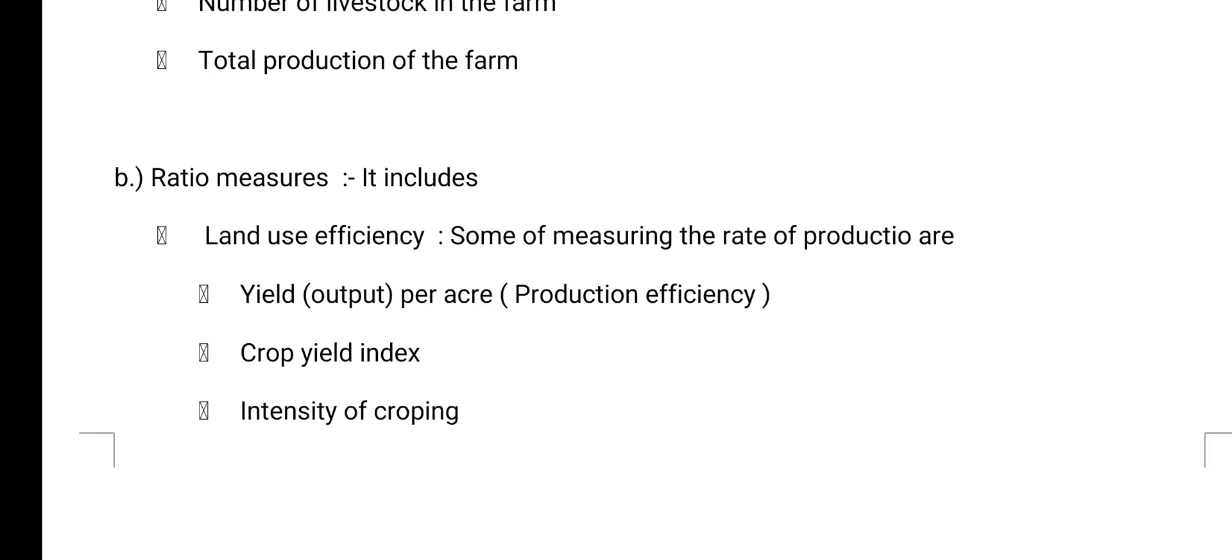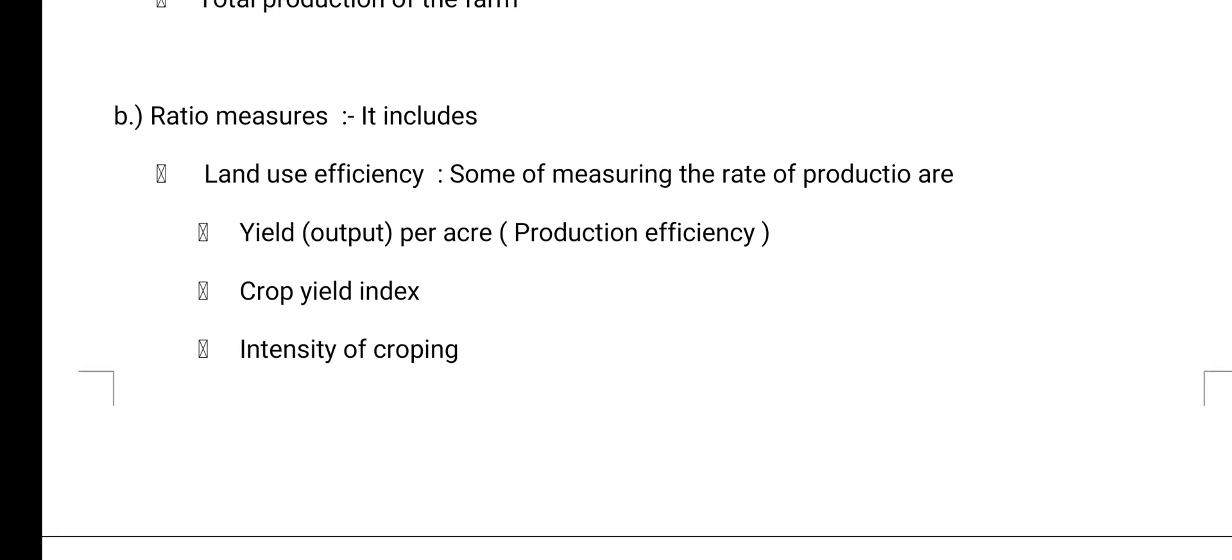The second is ratio measures. It includes land use efficiency. Sum of measuring rate of production are yield output per acre, production efficiency, crop index, crop yield index, intensity of cropping.